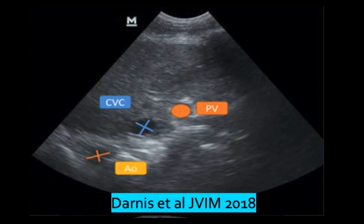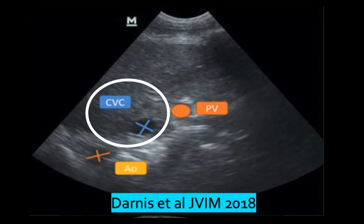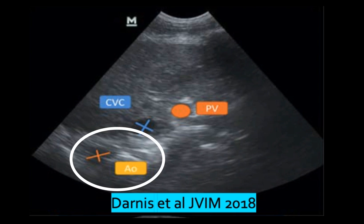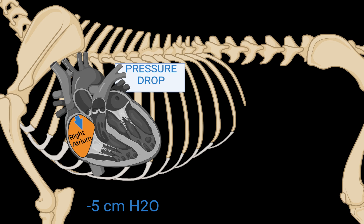The image represents a transverse sonographic view of the parasternal region with three major vessels: the azygous vein in orange, the CVC in blue, and the aorta in yellow.